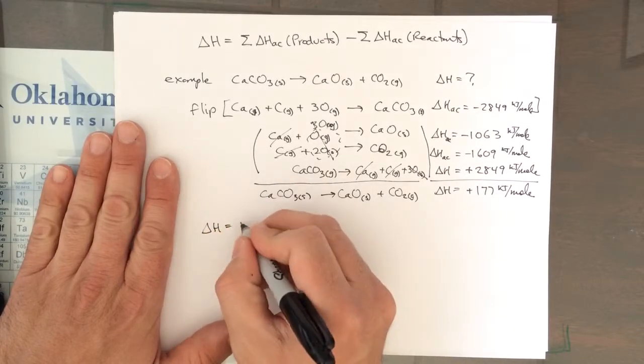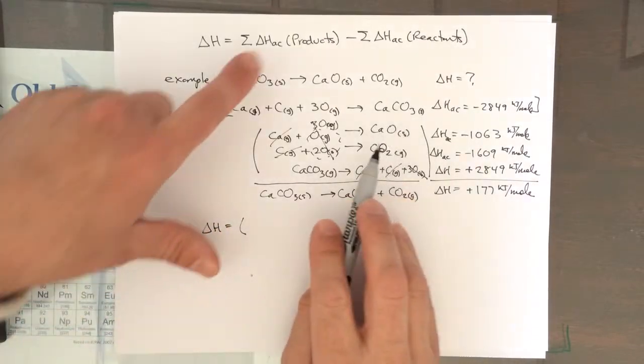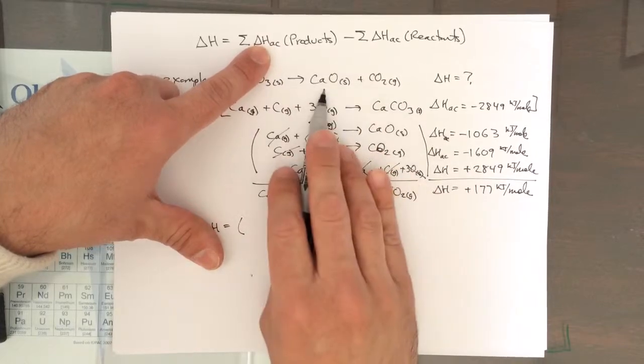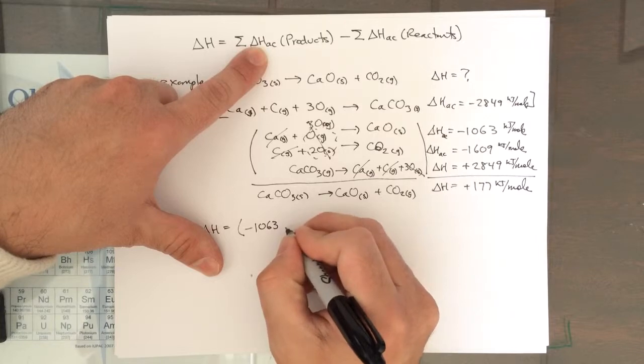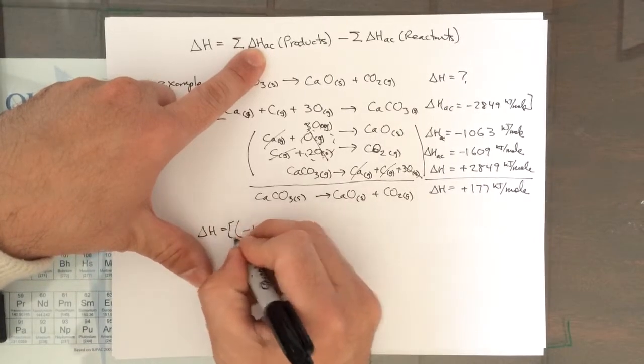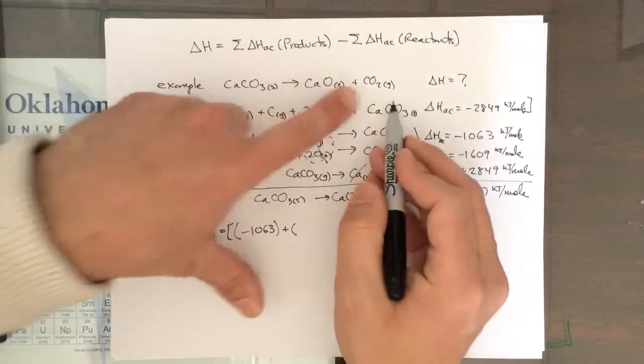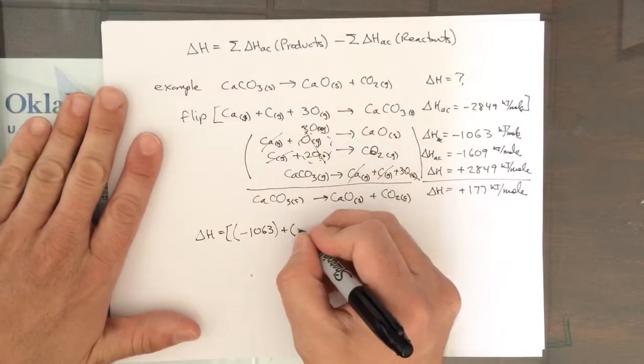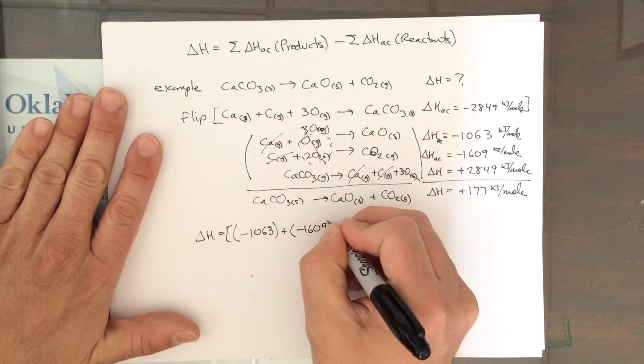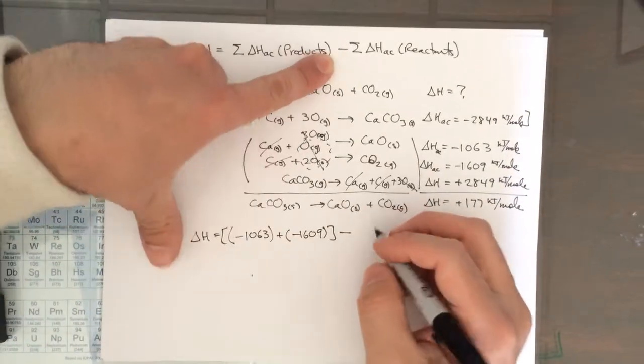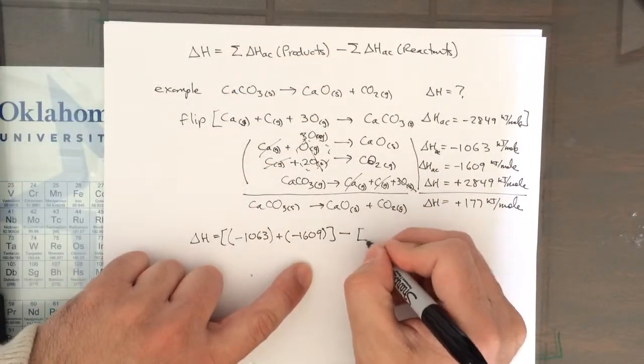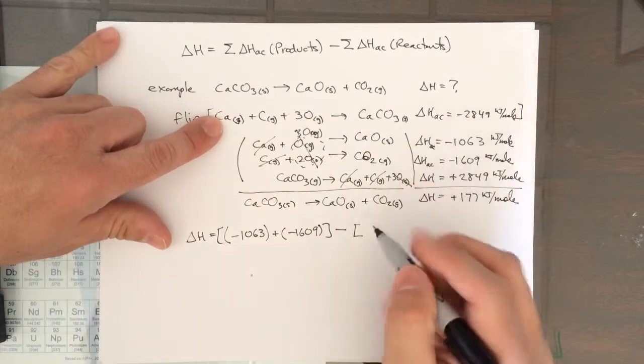the equation does it for you. So you take your delta HAC of your products, which is calcium oxide. That's minus 1063. And the delta HAC of the other product, which is CO2. That's minus 1609.